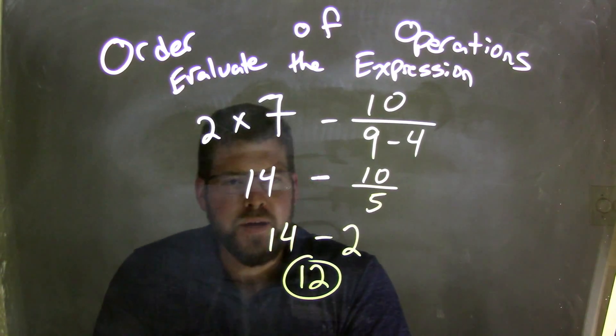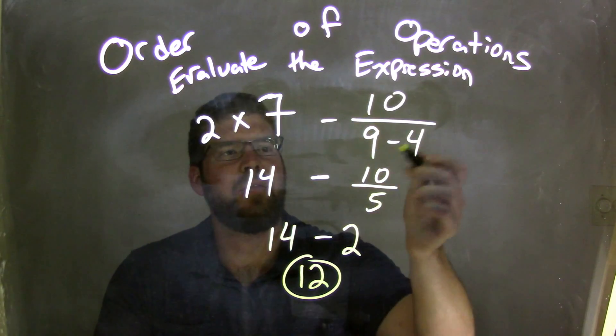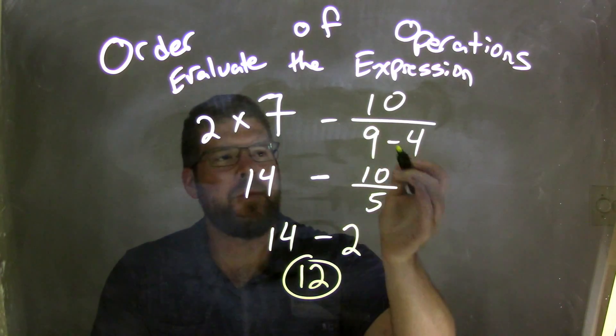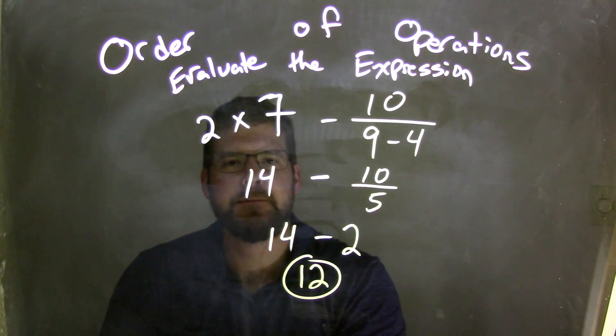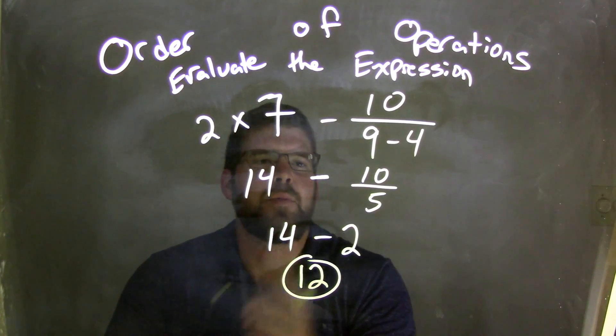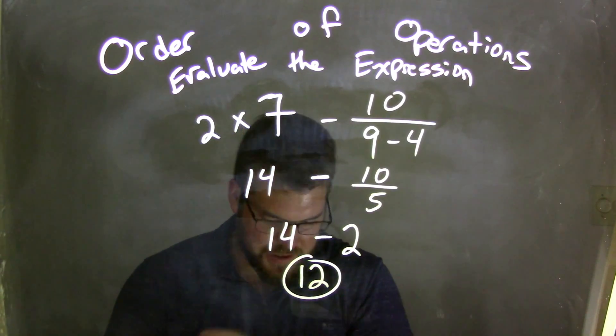So if I want to recap here again, I'm separated by that minus sign down the middle, so I dealt with the right side, that fraction, simplify the denominator, 9 minus 4 divided by 5. And then 2 times 7 is 14. From there, I then divided the 10 divided by 5 is equal to 2. And then 14 minus 2 came out to be 12.